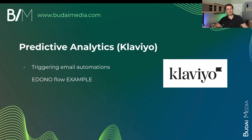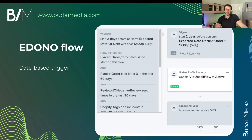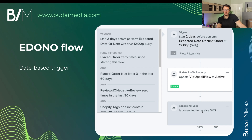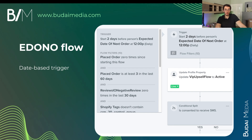Besides segmentation, one of my favorite examples of using predictive analytics is the EDNO flow — Estimated Date of Next Order. We go into Klaviyo and set up a date-based trigger. Machine learning can tell you when someone is most likely to buy from you again — the most likely date of their next purchase. You can specify this date and ask Klaviyo to send an email a couple of days before. You just send them a text message or email and push them through the fence. That's super useful.